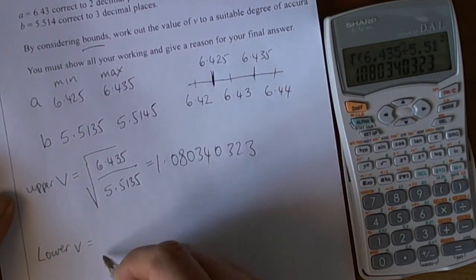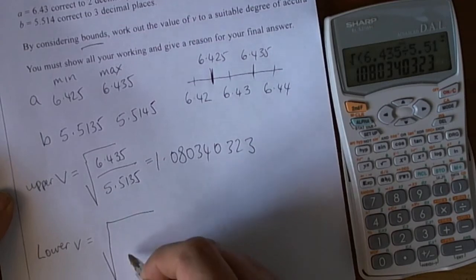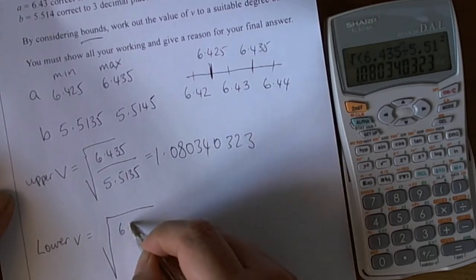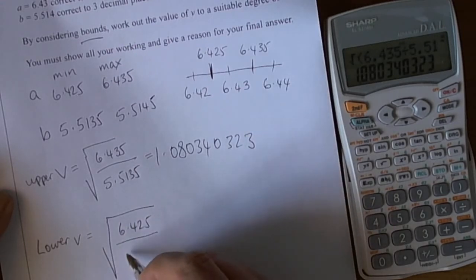And our lower V value, well we'd need the smallest values inside the square root sign. So we need the smallest possible value for A, so 6.425. We need the largest value for the B to make the smallest possible answer inside the square root.